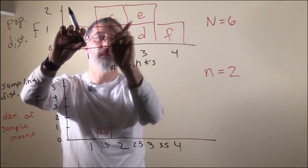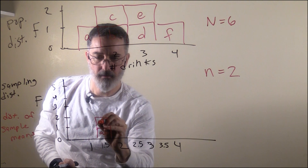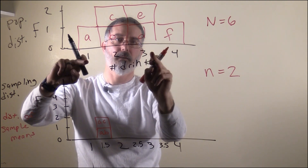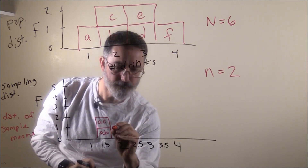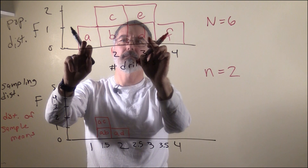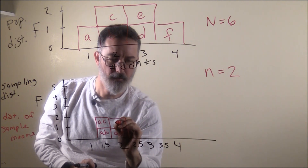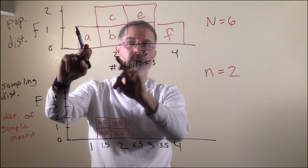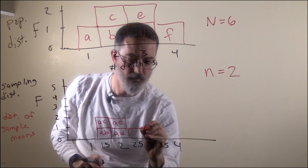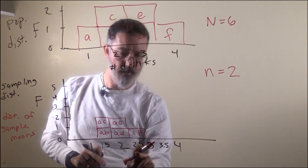A and C is also a 1 and a 2, so it is also a 1.5 sample mean. A and D is a score of 1 and 3, so the average is 2. A and E is again a 1 and a 3, for an average of 2. Then the last one for A is A and F — scores of 1 and 4 — so the average of those two is 2.5.